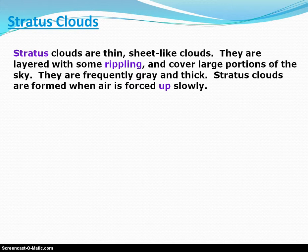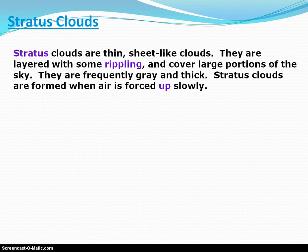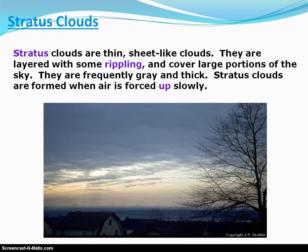Stratus clouds are going to have a thin, blanket-like look to them and will be gray in color. Most times these stratus clouds will blanket or cover the whole sky — you really won't see a break in them. They usually form when a front moves through and pushes warmer, moist air up into the atmosphere slowly, allowing stratus clouds to form. Here's a picture showing that overall blanket, sheet-like, dark gray, thicker-looking cloud cover — those are stratus clouds.